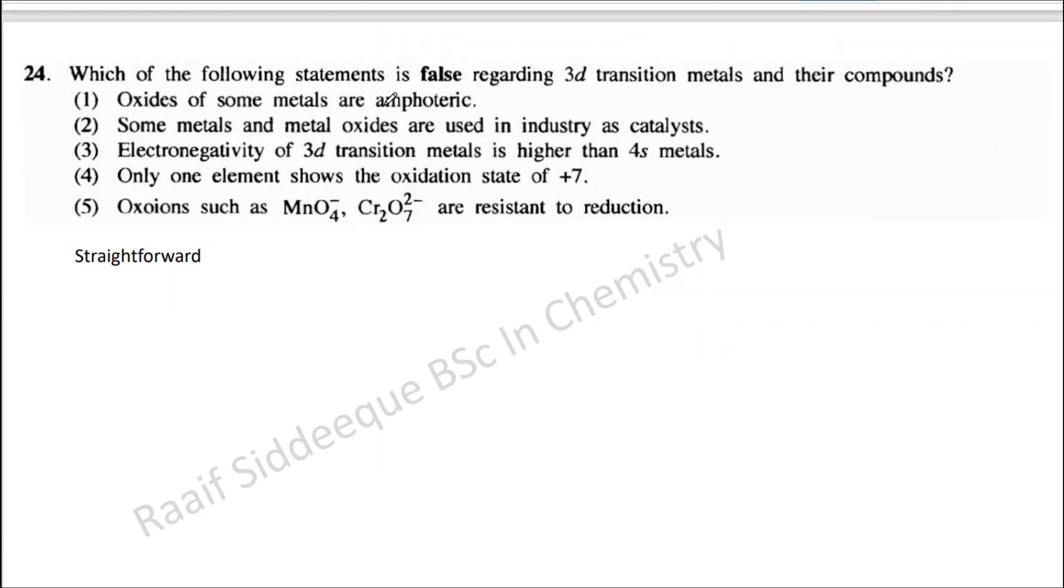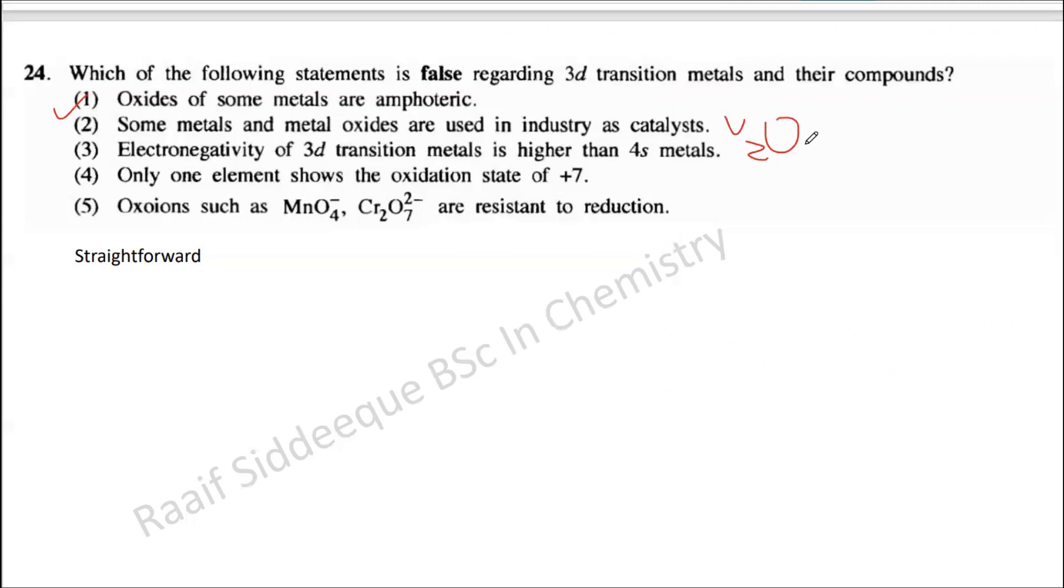Oxides of some metals are amphoteric. We have seen the oxides of vanadium and even manganese. We know that MnO2, those are amphoteric, so this is correct. Some metals and metal oxides are used in industrial catalysts, so automatically you should remember about V2O5, which is used in the sulfuric acid production as a catalyst.